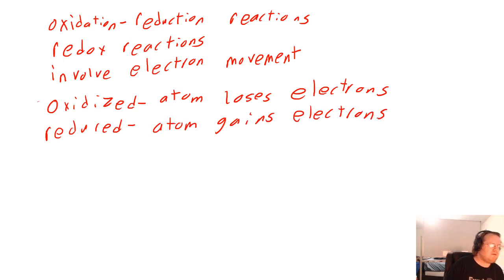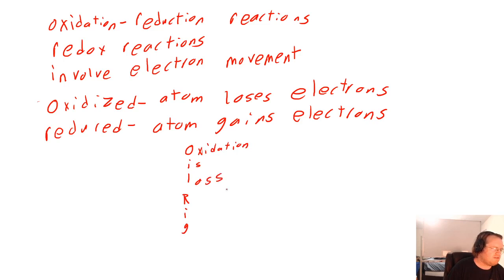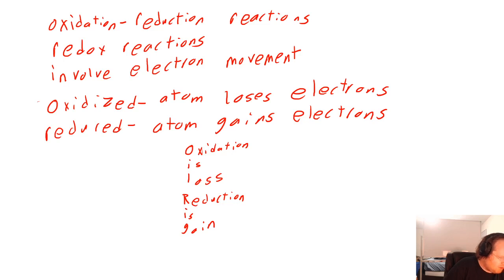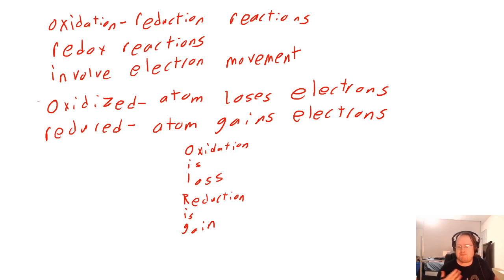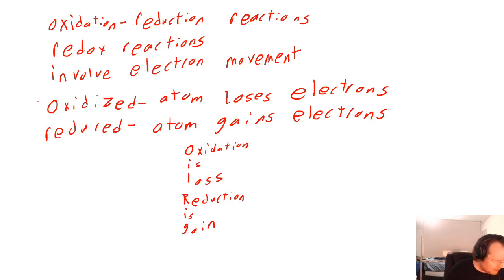To help remember this, you can use different mnemonic devices. I personally like the one I was taught as a student, which is OIL RIG. OIL RIG means that oxidation is loss of electrons and reduction is gain. For a reaction to be an oxidation-reduction reaction, something has to be oxidized and something has to be reduced. This always happens as a pair, since if something lost the electrons, they have to go somewhere — when one thing loses, the other is going to gain.